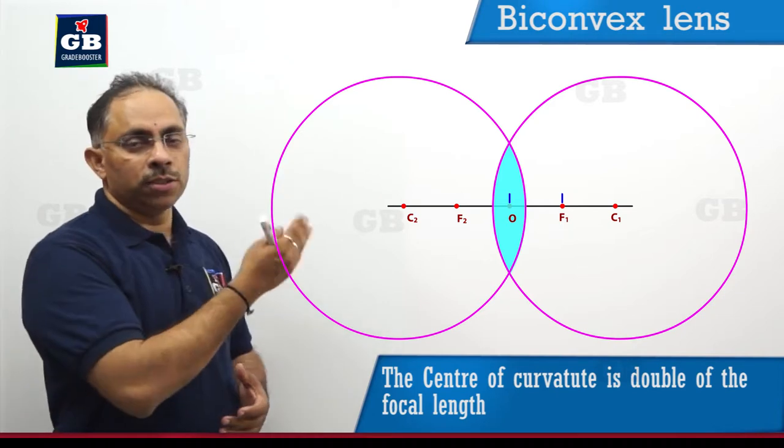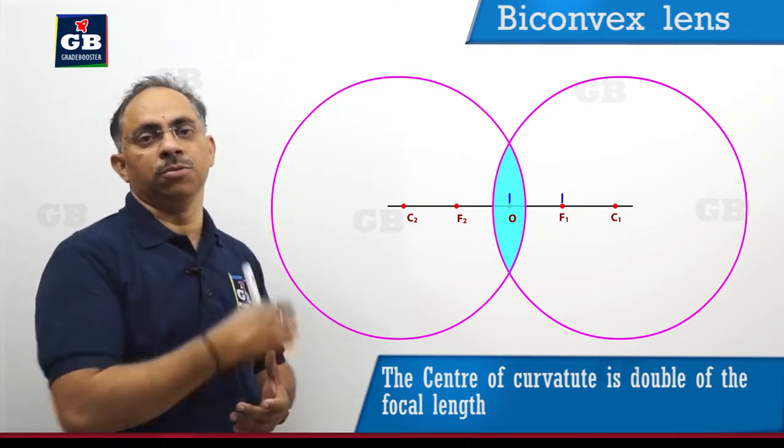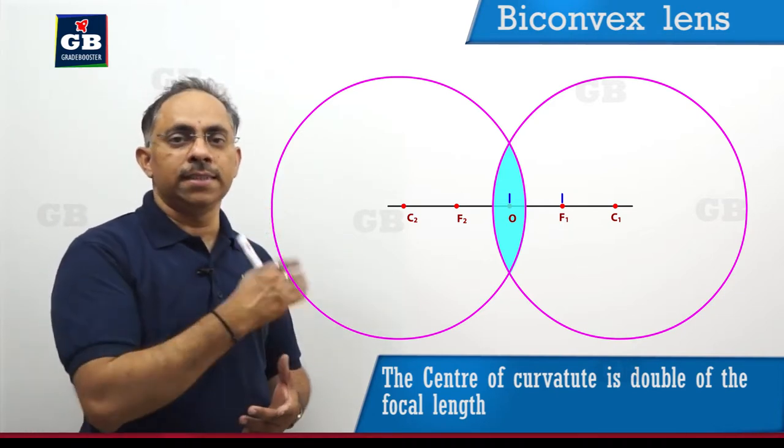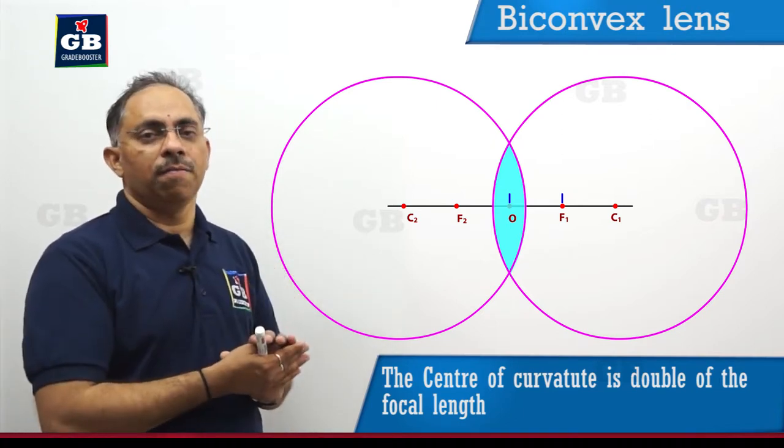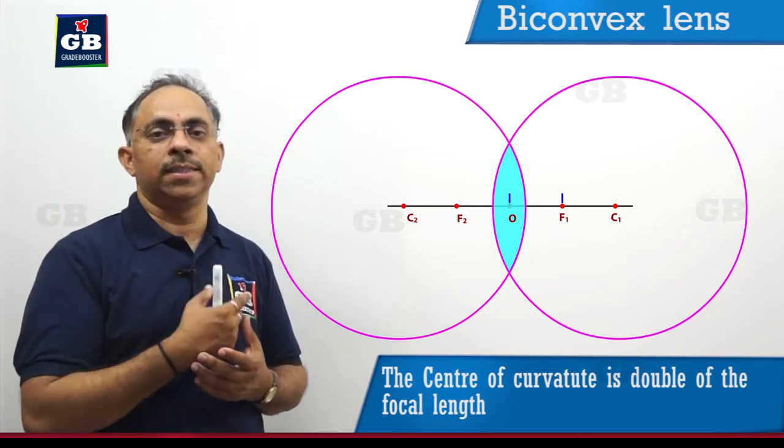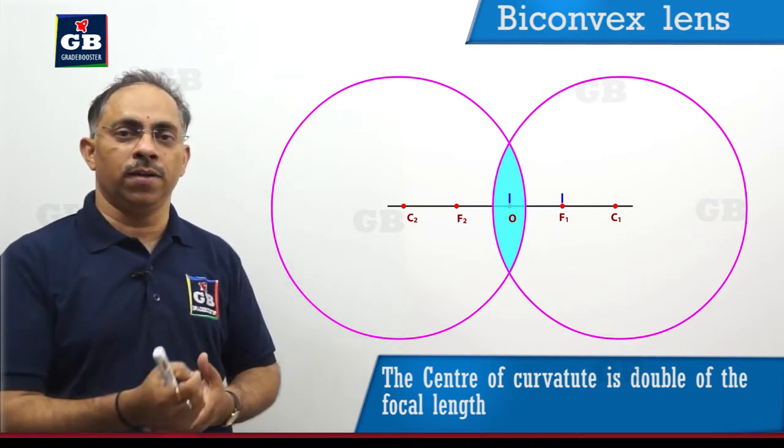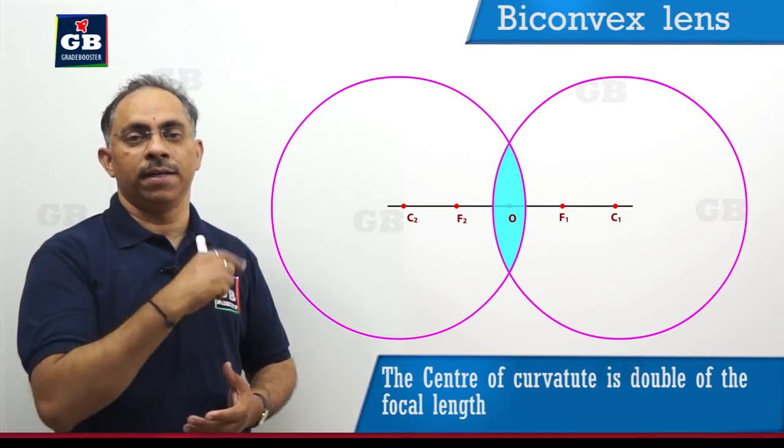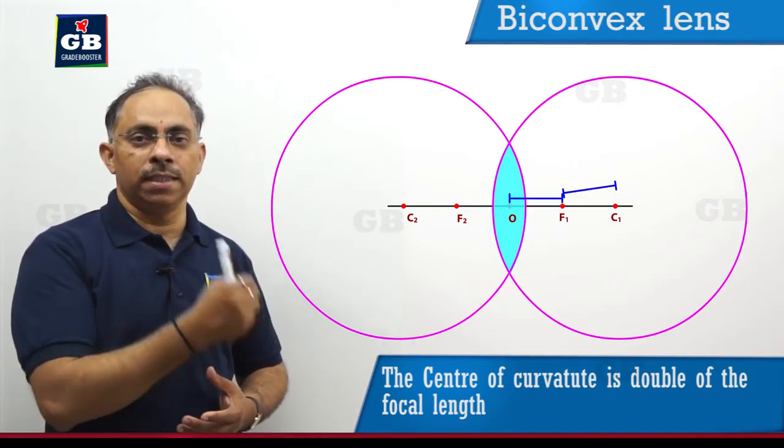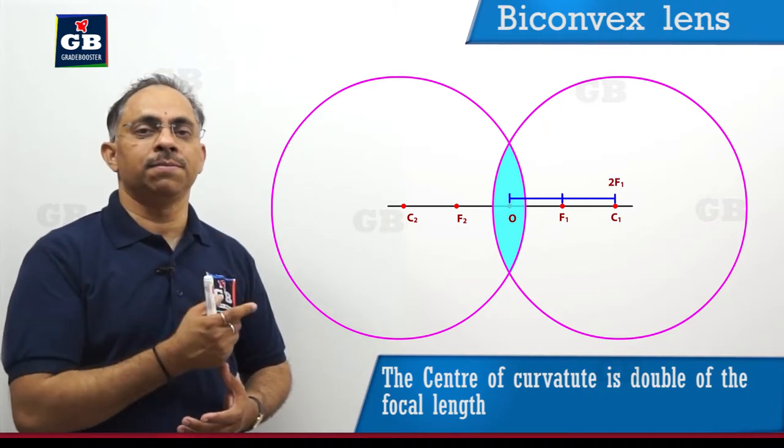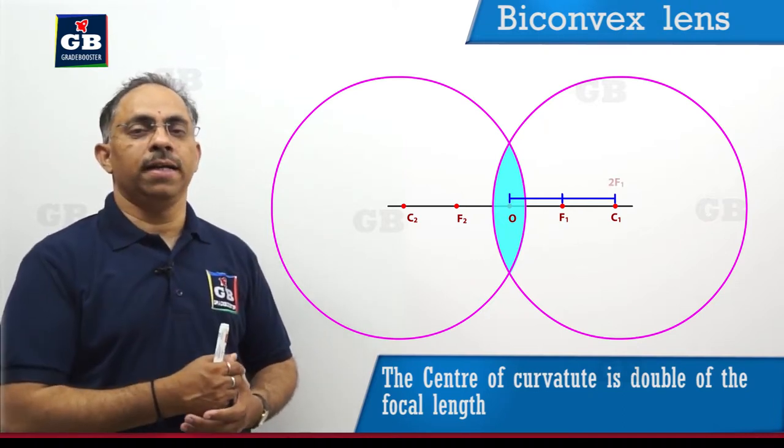If I assume the two centers to be C1 and C2, then this C1 and C2 are the points which are almost twice the focal length. That means we can assume this C1 and C2 to be the points like 2F1 and 2F2. When we double the distance between the optic center O and the principal focus F1, we will get the distance between O and 2F1.